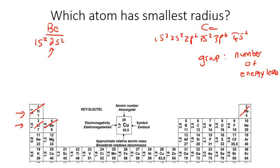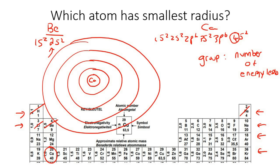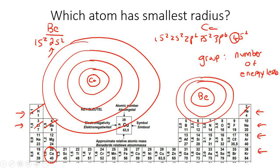Whereas calcium has 4 energy levels because it's in row 4 on the periodic table. So if you drew calcium, you'd put its nucleus and then four energy levels around it — look how big that is. Whereas beryllium would only have two energy levels around its nucleus — much smaller.